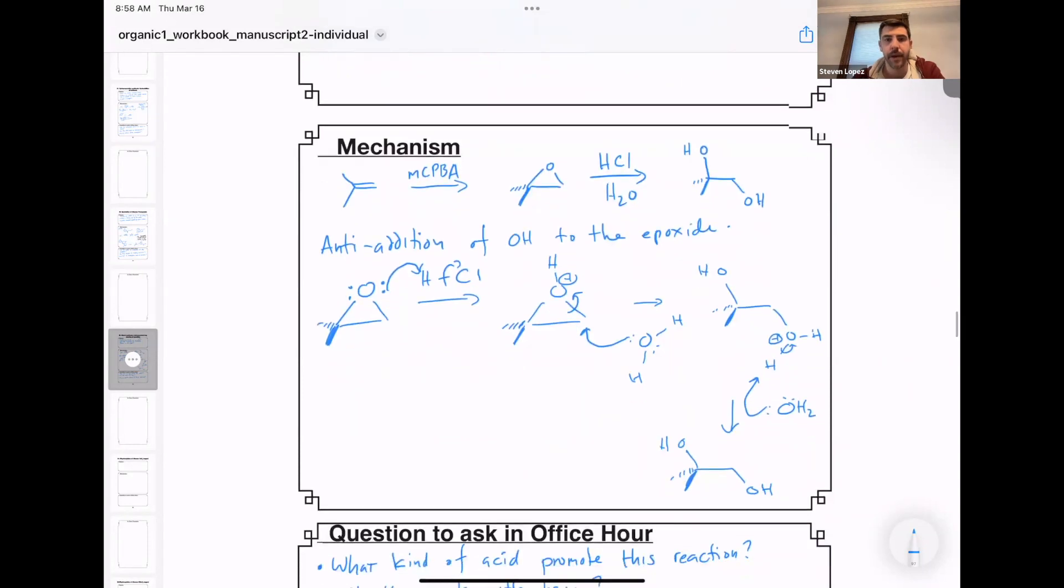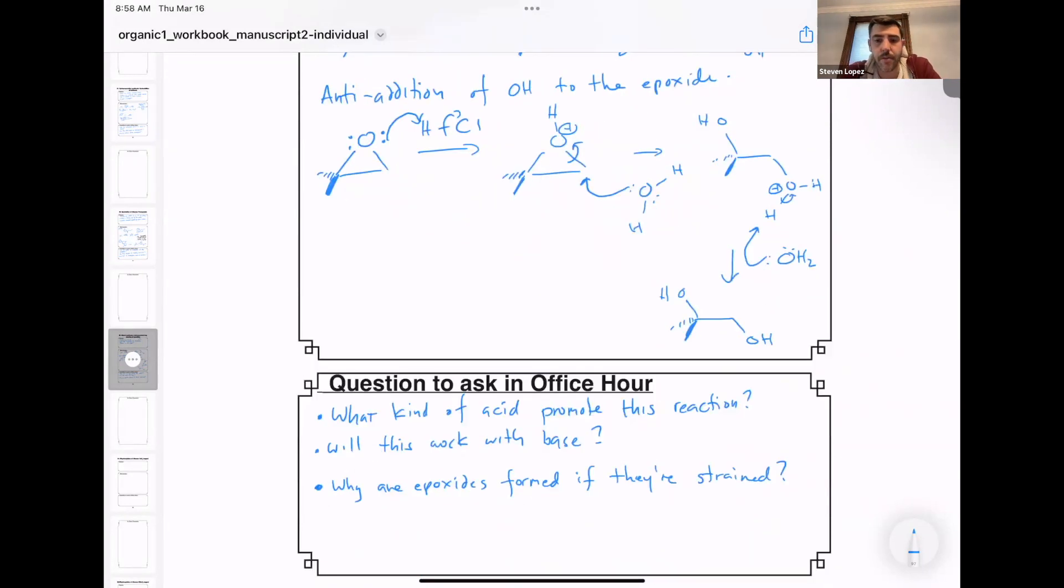Okay, and some questions you might want to ask in office hour. One, what kind of acid will promote this reaction? Here we've used a very strong acid, but could a weaker acid be used? How about a stronger acid? Two, will this work with base? If we started with the epoxide and added, say, sodium hydroxide, would this reaction work? Three, why are epoxides formed if they're strained in the first place? So the first step of my synthesis involved an addition of MCPBA in the presence of that alkene. And you can ask your instructor to explain this.